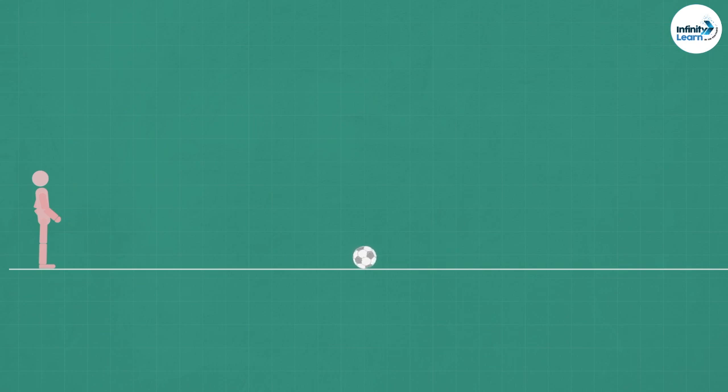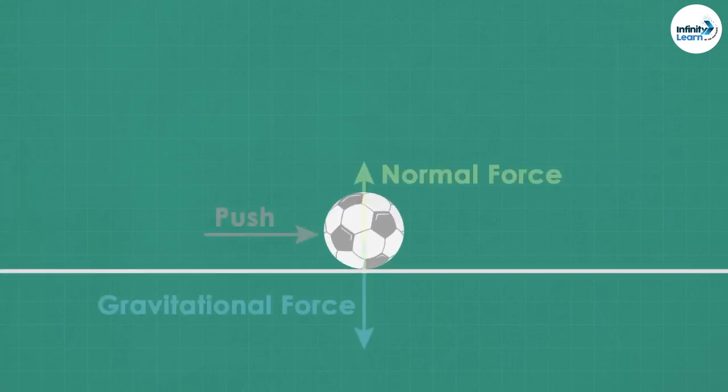But hold on, why did the ball stop moving after covering 15 meters? The ball started moving at a pace and then slowly came to a halt. If there is no force from the other side to stop it, how did it stop? Was there a force that stopped it?